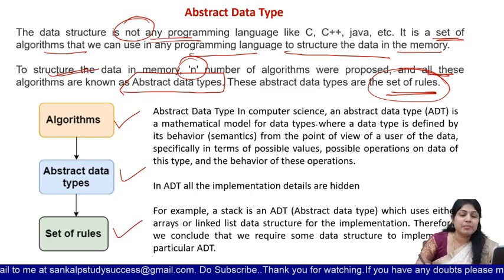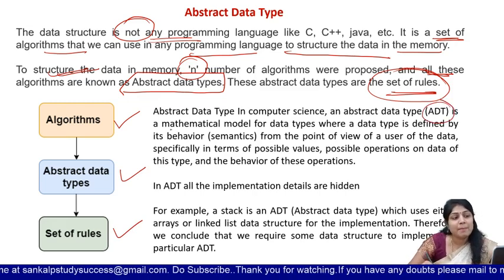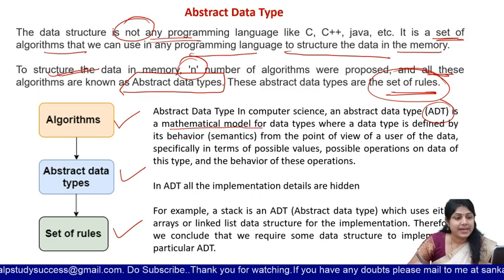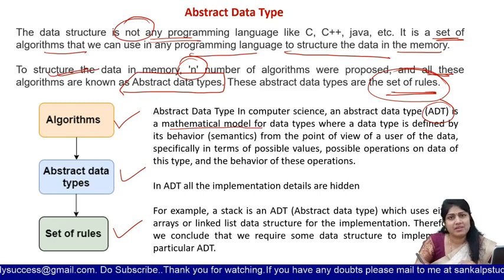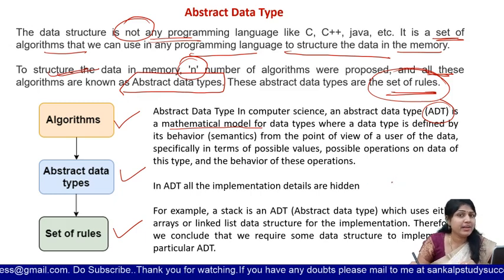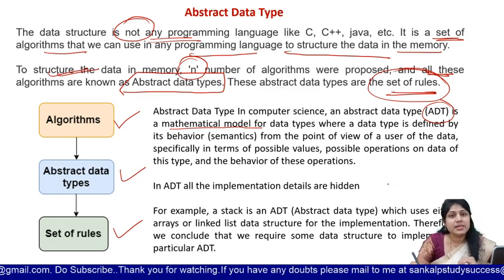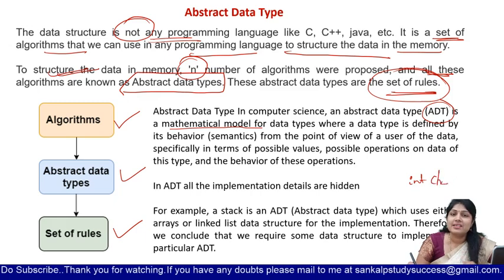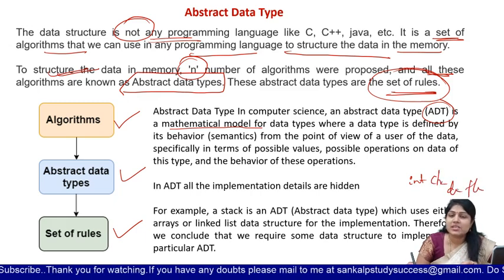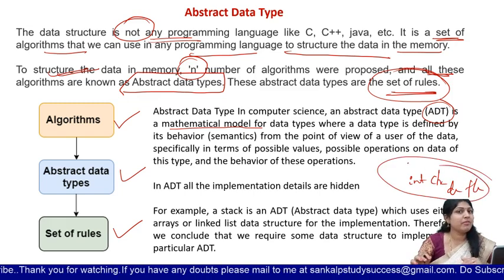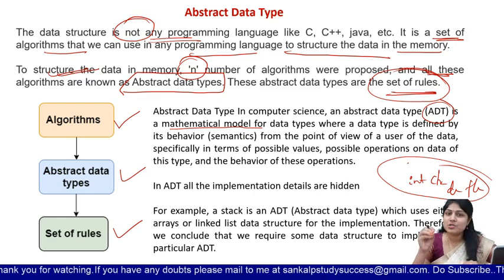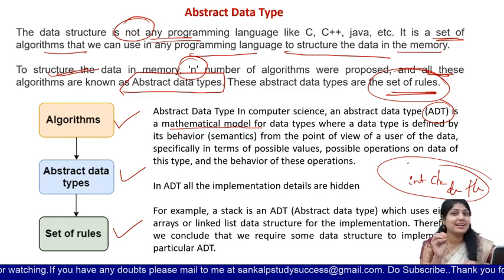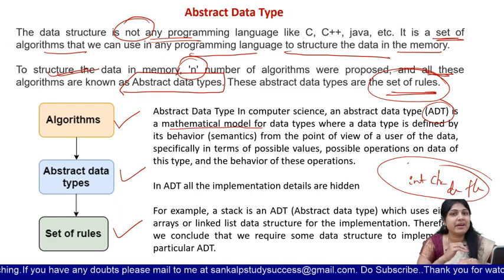An abstract data type in computer science — ADT — is a mathematical model for data types, where a data type is defined by its behavior. So data type — for example, we have predefined data types in C, C++, Java: we have int, char, double, float. With the help of these we can perform several operations on the data. When we want to store some values into a variable, first we have to specify what data type it is — that is nothing but predefined data types.